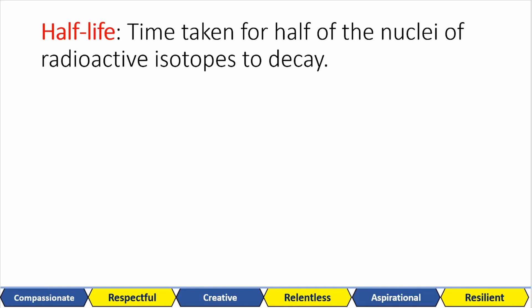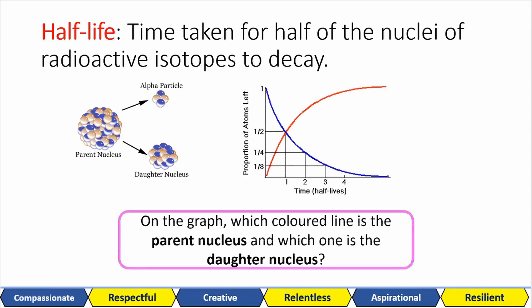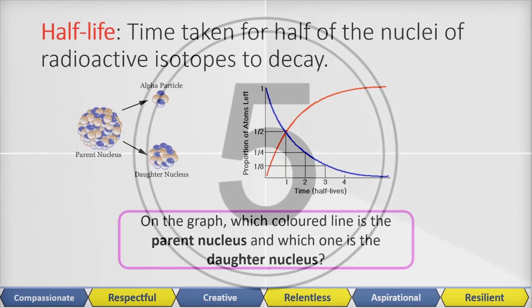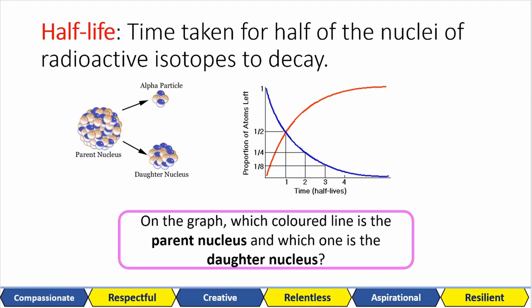You should define half-life as the time taken for half of the nuclei of a radioactive isotope to decay. Here is an example of alpha decay. You start off with a parent nucleus and that decays into the radiation and the daughter nucleus. Look at this graph. One of the colours shows the parent nucleus over time and the other shows the daughter nucleus. You start off with 100% parent nucleus, so that must mean the blue line that's decreasing is the parent nucleus. And the red line that's going up, that's building up, is the daughter nucleus.